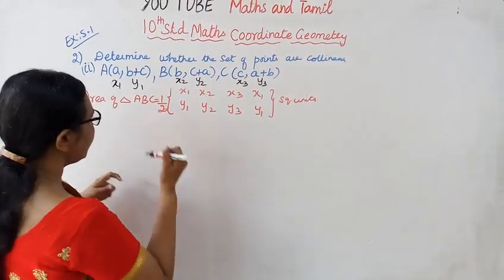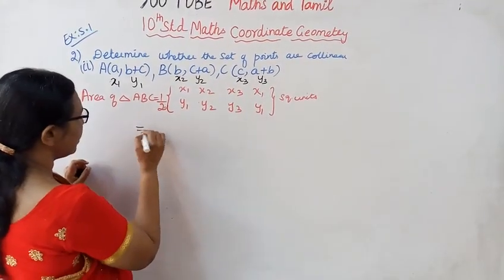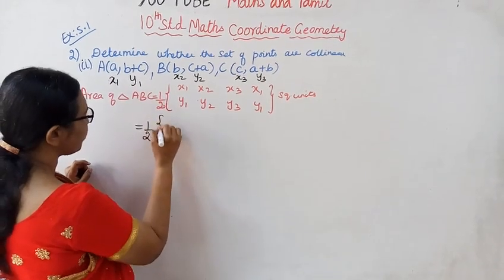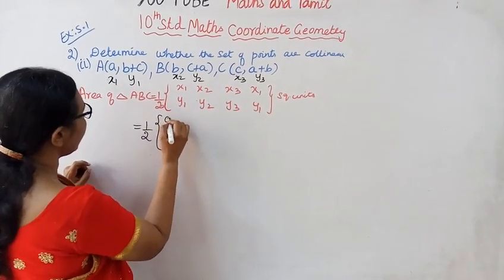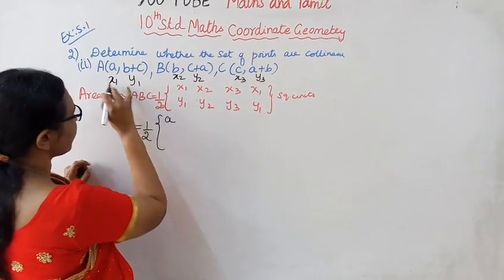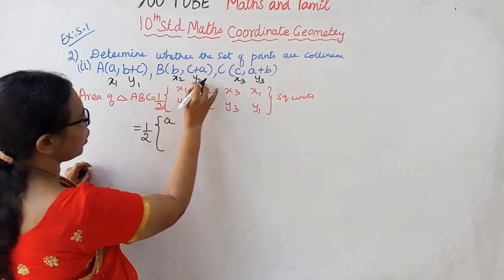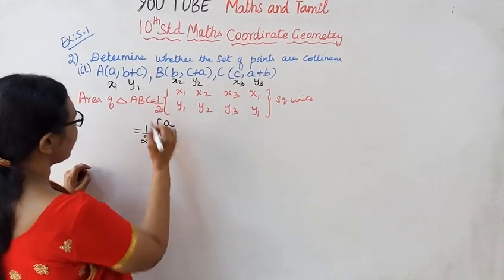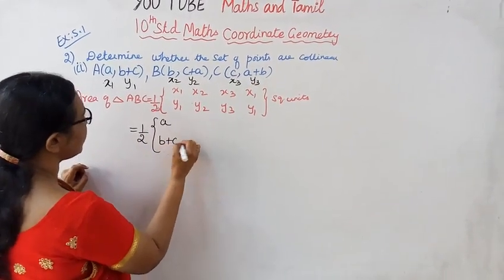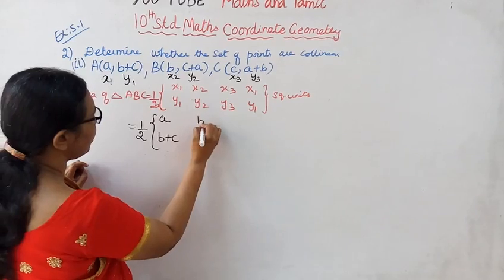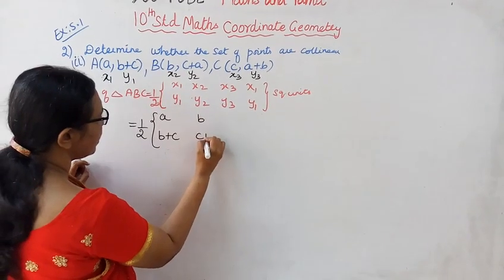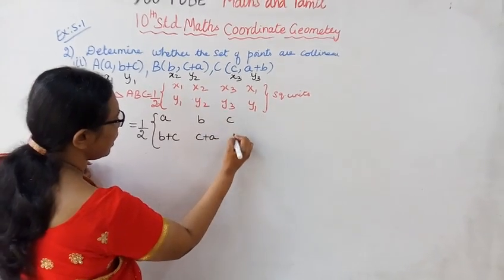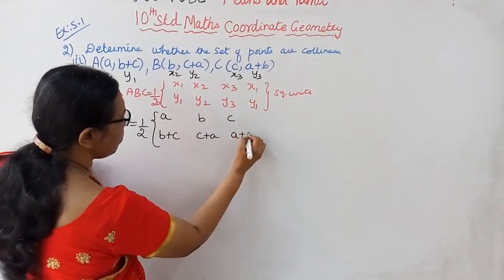That is equal to half into: X1 = A, Y1 = B+C; X2 = B, Y2 = C+A; X3 = C, Y3 = A+B.